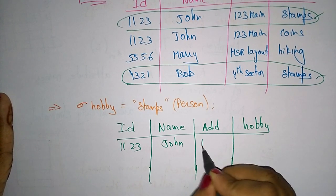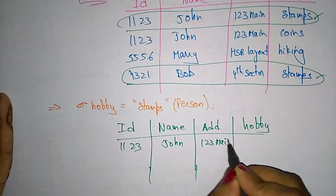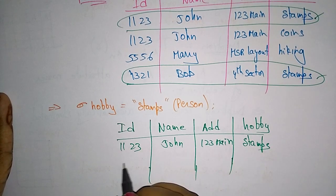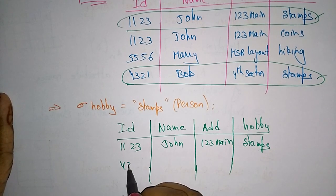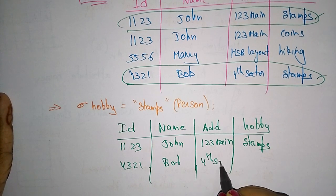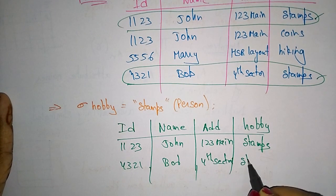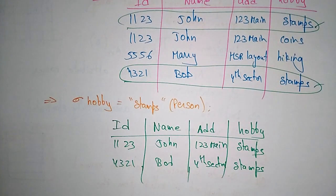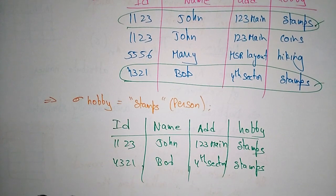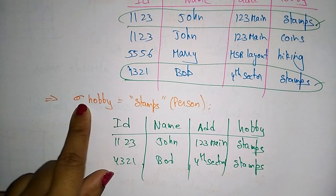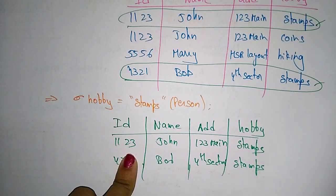The output of the selection query includes all columns: id, name, address, hobby. The selected rows are: John, 123 Main, stamps — and 4321, Bob, Fourth Sector, stamps collection. So only the persons who have the hobby of stamps are selected. This is the output for this selection query.